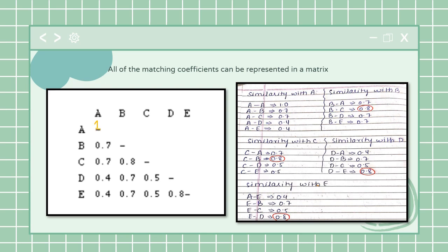This will make things very clear. Why did I do this? See, A is 100 percent similar to A. Now A is 70 percent similar to B. A is 70 percent similar to C. A is 40 percent similar to D.